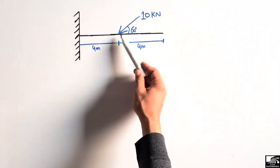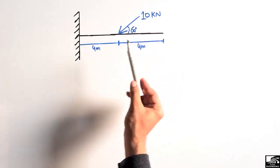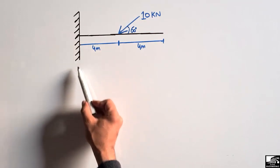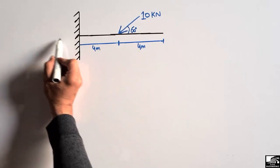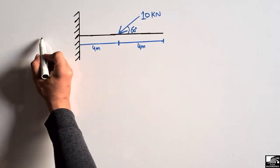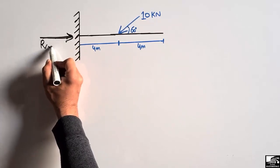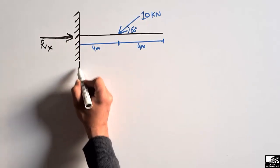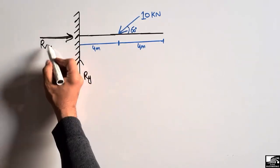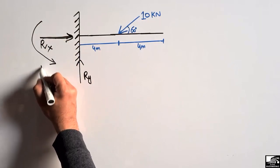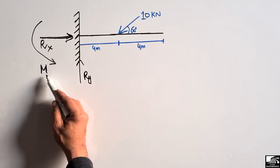This cantilever beam has been loaded with an inclined load of 10 kilonewtons, and this inclined load makes an angle of 60 degrees with the beam. We are going to find out the horizontal reaction, the vertical reaction, and the moment at this fixed support. A fixed support can take horizontal load, represented by Rx, vertical load Ry, and moment M.